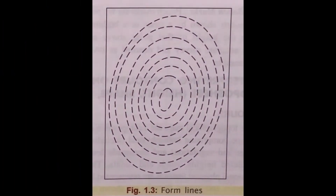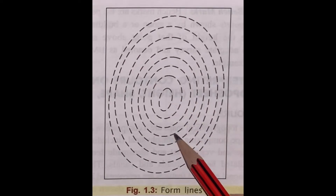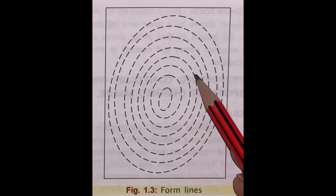Hello students. In my last video we learned about the methods of hatching and hill shading. Let's take the third method — form lines. Form lines are contour lines drawn as broken lines, and so they are called form lines.